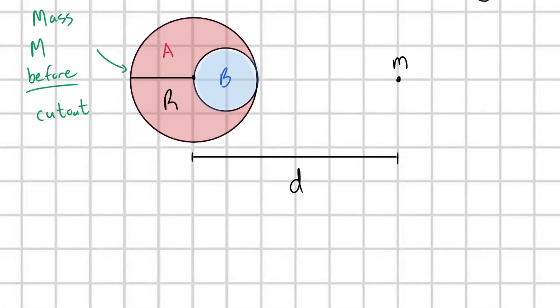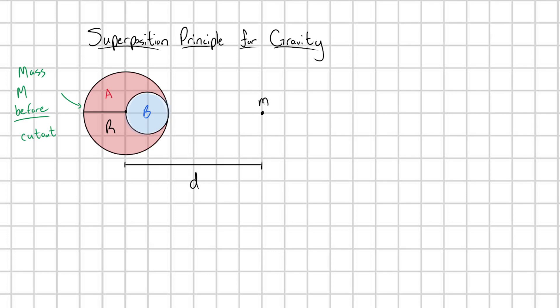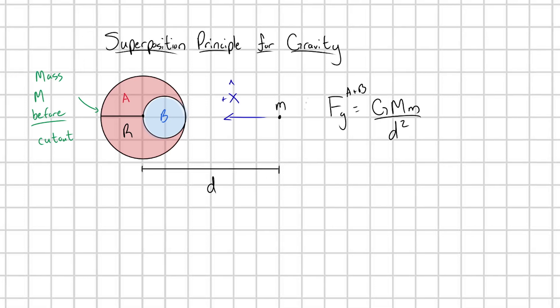What would be the force on our little mass m? Now we just have a solid completely filled in planet, in which case the force is going to be FG equals G big M little m over d squared. That's if we consider the left here to be the positive x hat direction. This is an attractive force. My mass is getting pulled towards the planet. But this gravitational force, what was this from? This is from the total combined system A plus B, our total system.